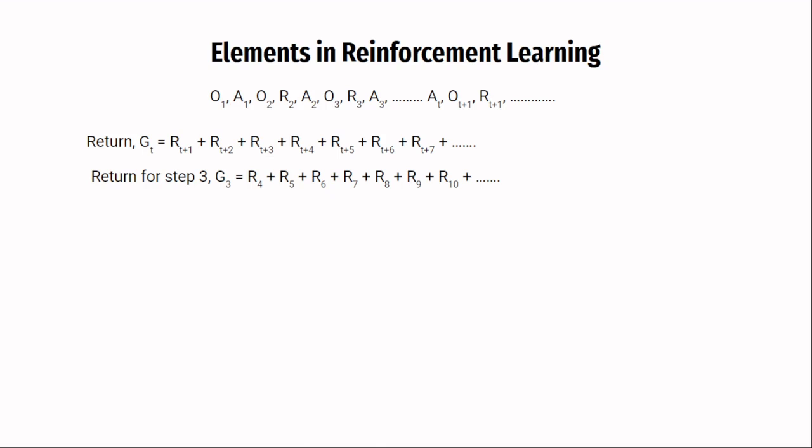The return is typically written with a gamma which is called the discount factor. Don't think too much about it as we will talk about this factor a lot when you implement the algorithms in practice. In short, the discount factor hinders the ability of the agent to look too far into the future.